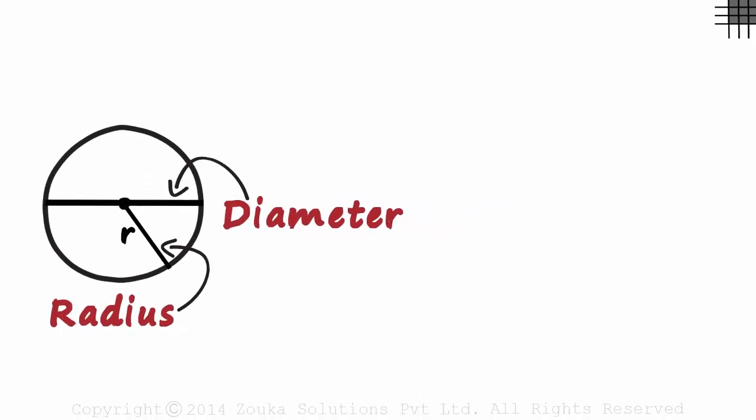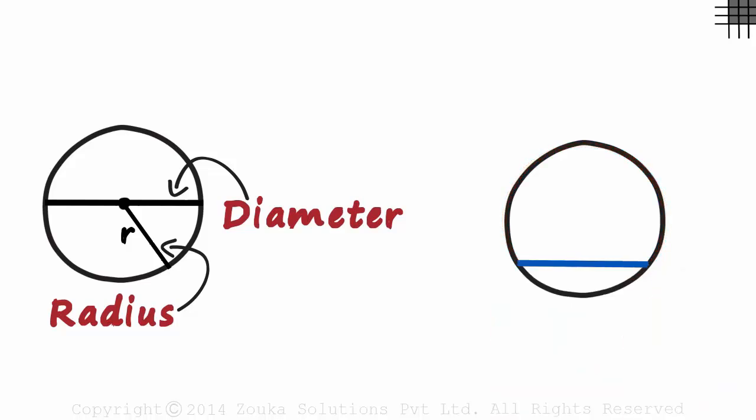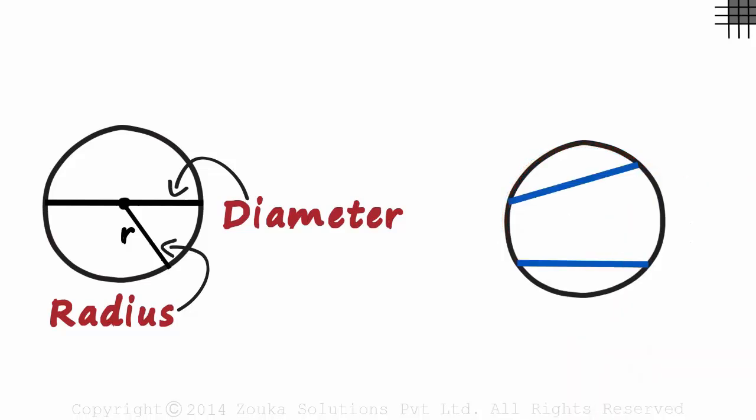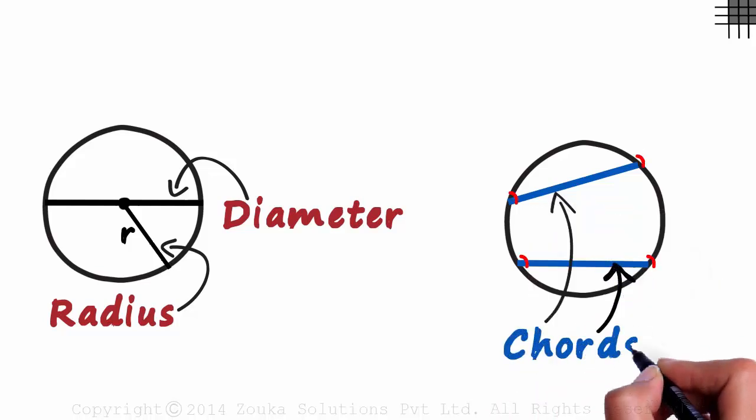Moving on, another concept we need to know is that of chords in circles. They are line segments which have their end points lying on the boundary of the circle. Like this one or this one. Both are called chords as their end points lie on the boundary of the circle.